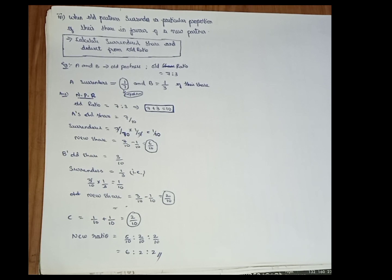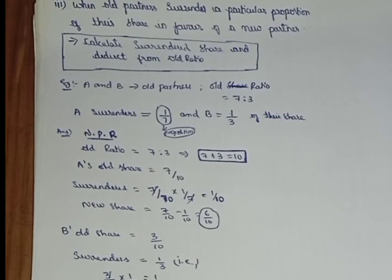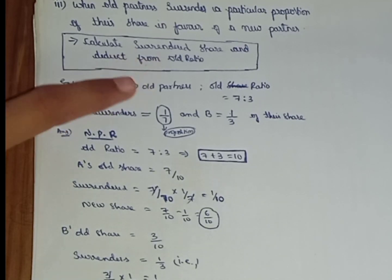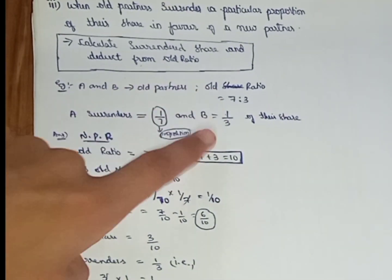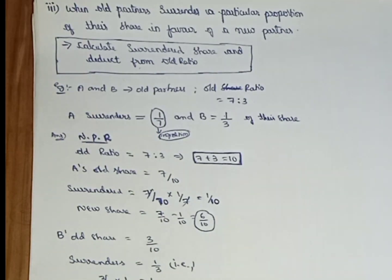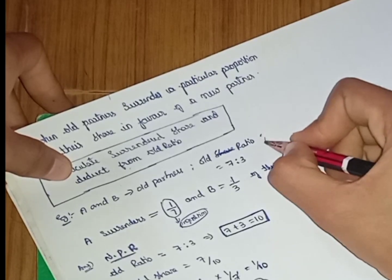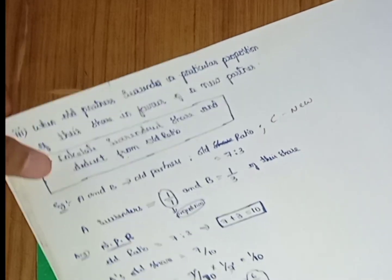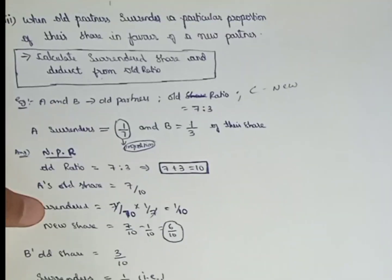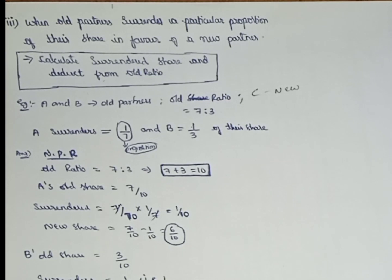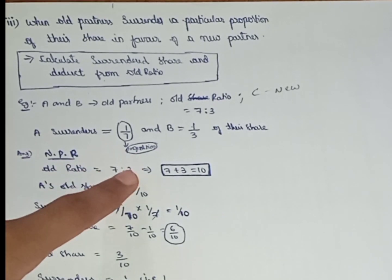For the third case example, A and B are old partners with an old ratio of 7 is to 3. A will surrender 1 by 7 proportion of their share, and B will surrender 1 by 3 proportion of their share to new partner C. So 7 plus 3 equals 10 total parts: A gets 7 parts and B gets 3 parts.